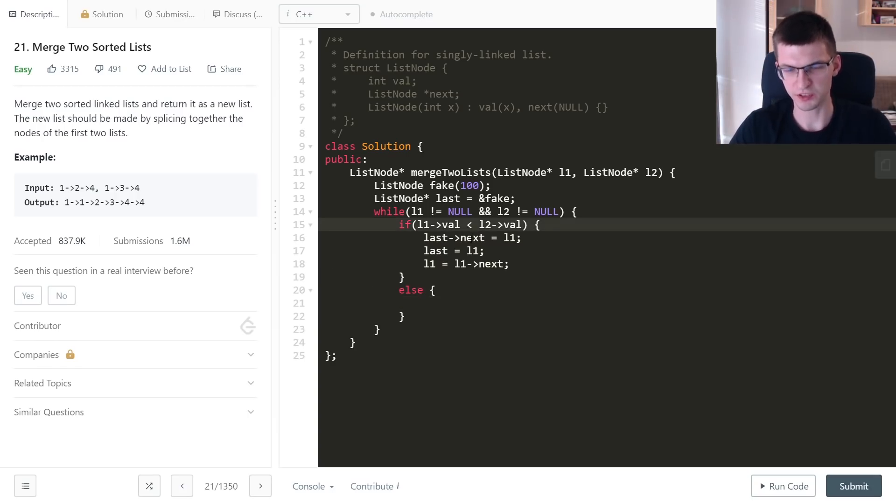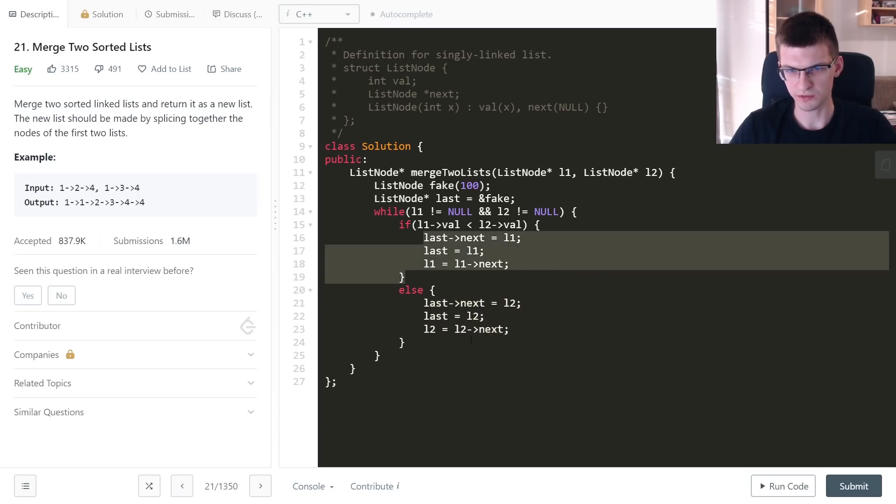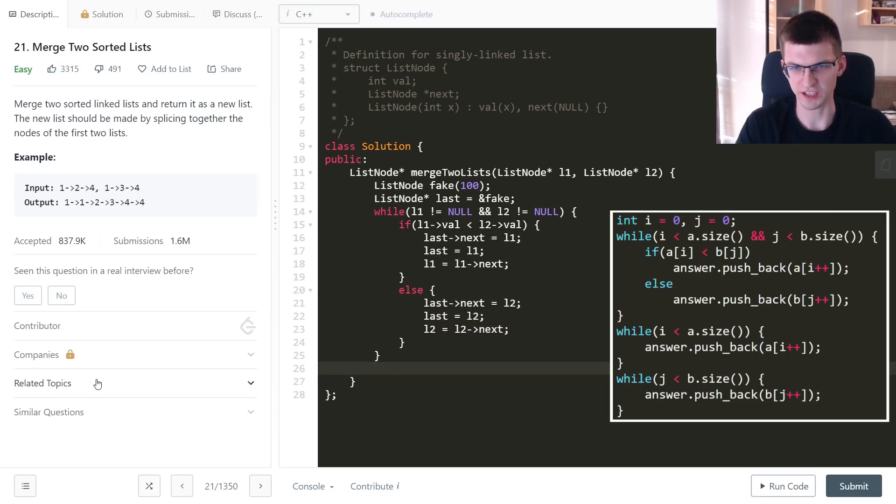By the way we can put here smaller than or equal to, it will be fine. It's just about deciding ties. This is symmetrical to that thing.